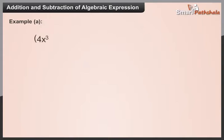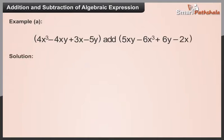Solve 4x³ minus 4xy plus 3x minus 5y, add 5xy minus 6x³ plus 6y minus 2x. Solution: 4x³ minus 4xy plus 3x minus 5y, add 5xy minus 6x³ plus 6y minus 2x.